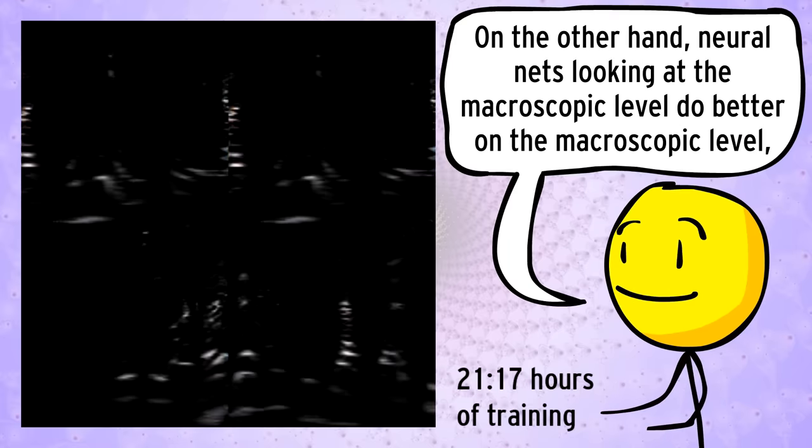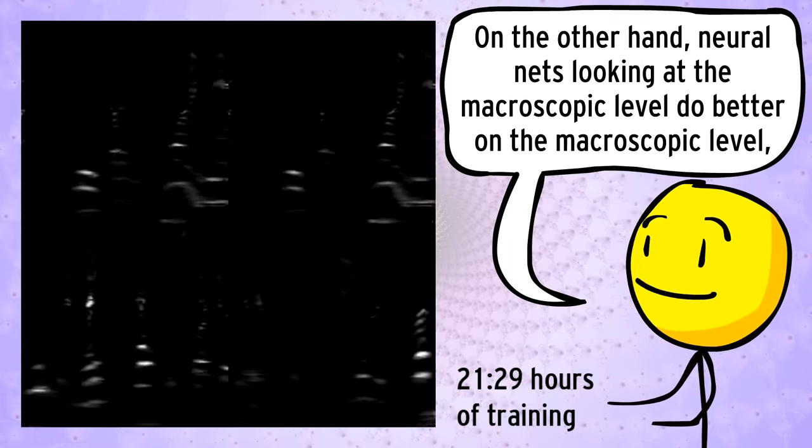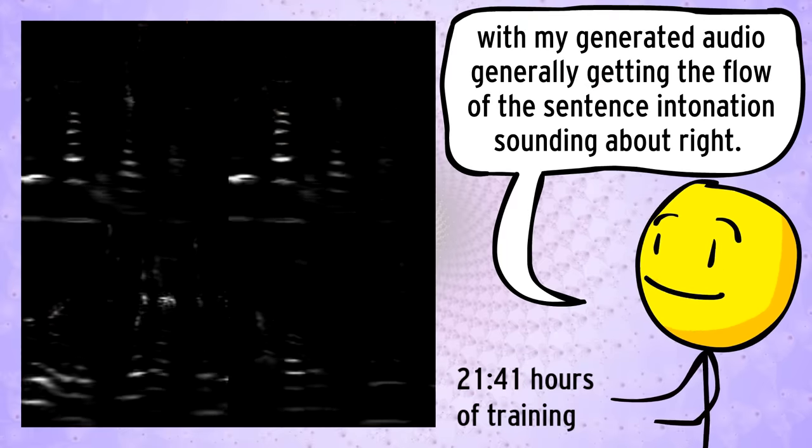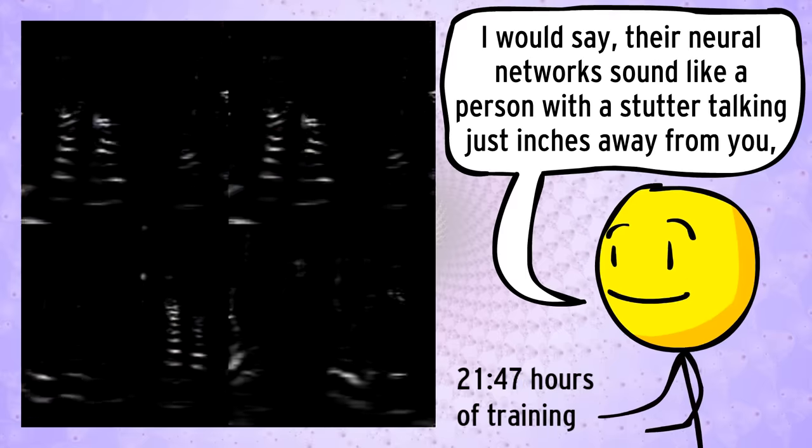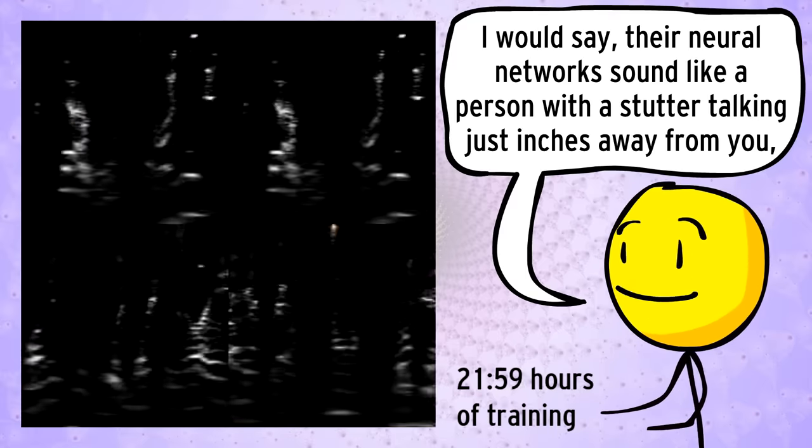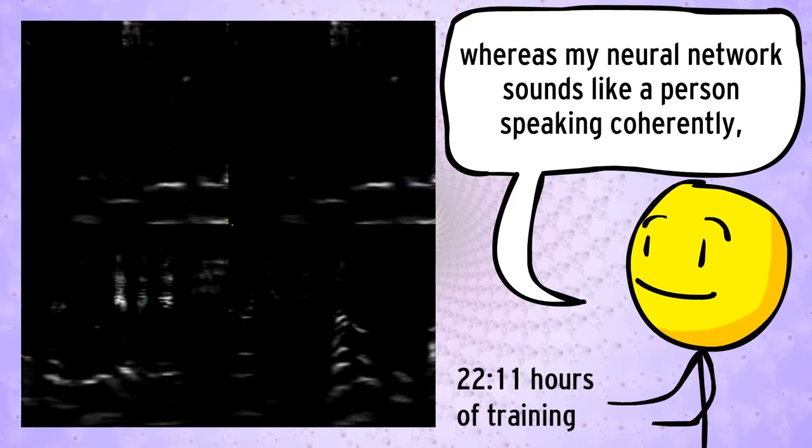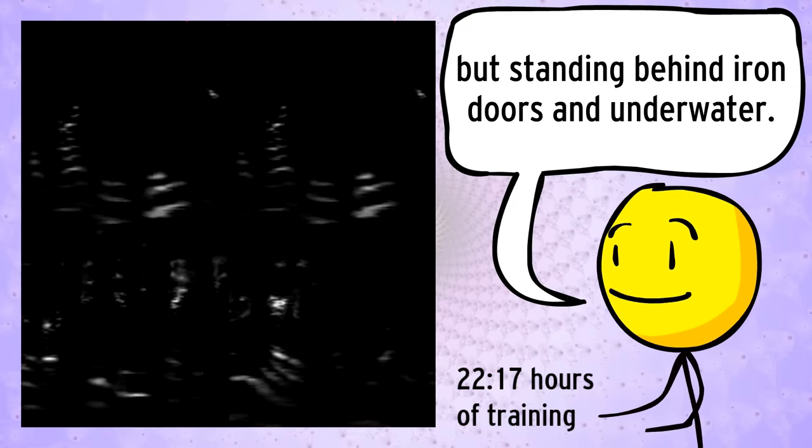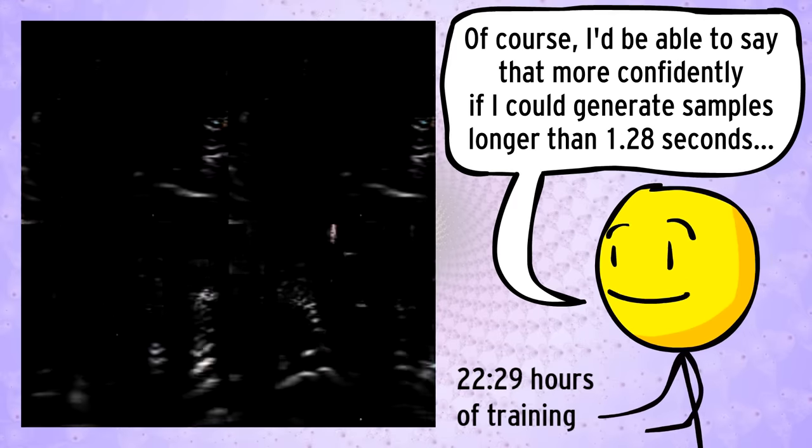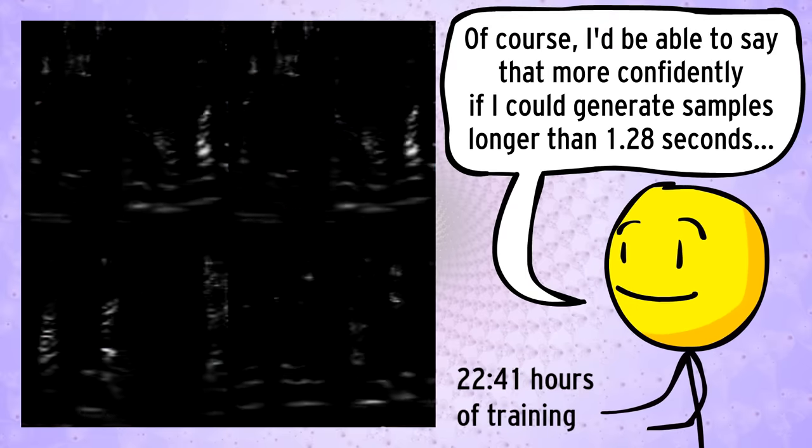On the other hand, neural nets looking at the macroscopic level do better on the macroscopic level, with my generated audio generally getting the flow of sentence intonation sounding about right. I would say their neural networks sound like a person with a stutter talking just inches away from you, whereas my neural network sounds like a person speaking coherently but standing behind iron doors and underwater. Of course, I'd be able to say that a little more confidently if I could generate samples longer than 1.28 seconds.